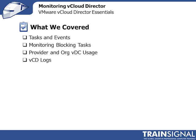That brings us to the end of this lesson on monitoring vCloud Director. We started with tasks and events — just like the vSphere client, you can monitor these as both a system admin and an organizational admin. Then I covered blocking tasks and where to find them. We covered provider and organizational virtual data center usage, with multiple places to look. As a system admin, be especially aware of provider VDC usage and make sure your resource clusters aren't being overutilized. As an org admin, watch your org VDCs to ensure they don't max out allocated resources. Finally, we covered the vCloud Director log files, where they're located, and how to find them. Thanks for watching.